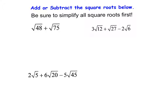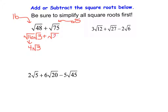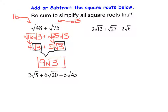Let's work through three more examples. For the first one, I have the square root of forty-eight plus the square root of seventy-five. Forty-eight is divisible by sixteen, the largest perfect square, so I rewrite it as the square root of sixteen times the square root of three. The square root of sixteen is four, giving four square roots of three. Seventy-five is divisible by twenty-five, so I rewrite it as the square root of twenty-five times the square root of three. The square root of twenty-five is five, giving five square roots of three. These have matching square root parts, so four plus five equals nine square roots of three.